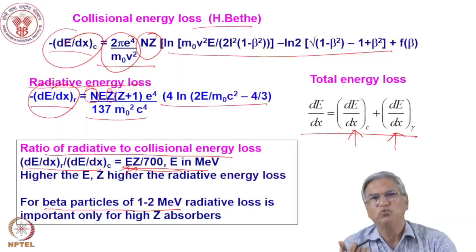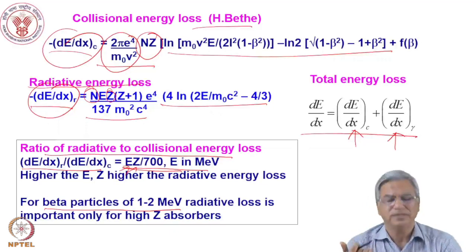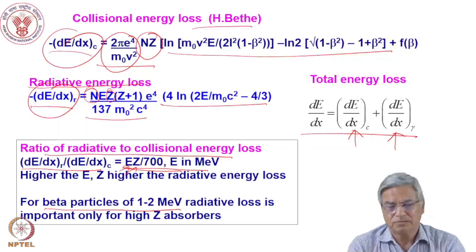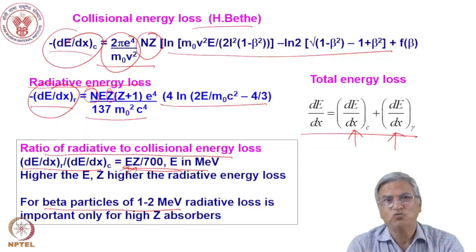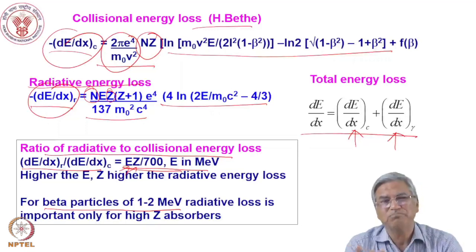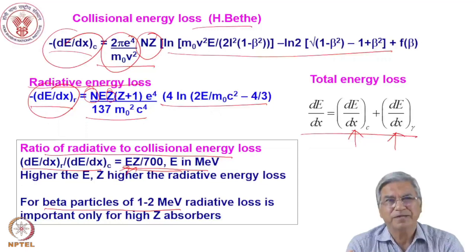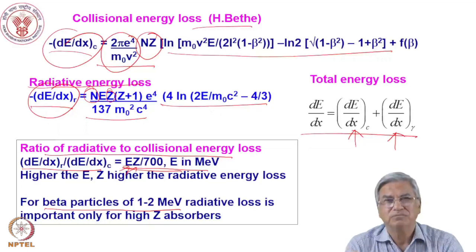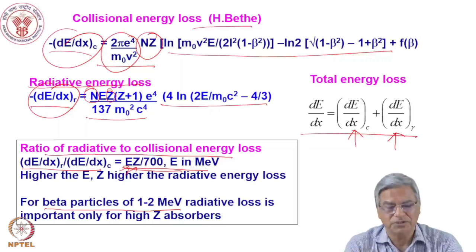When doing beta counting, you must be very careful about nearby high-Z materials. You should not make the source on a high-Z backing material — you can use aluminium, but not stainless steel or other high-Z materials.